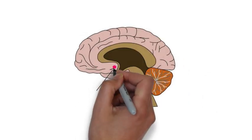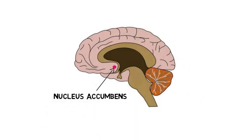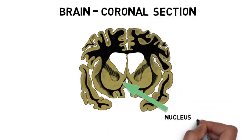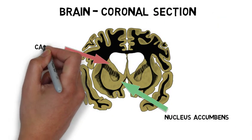The nucleus accumbens is found in a part of the brain called the basal forebrain, which is located near the front and bottom of the brain. The nucleus accumbens is the major component of the ventral striatum, and is situated between the caudate and the putamen.